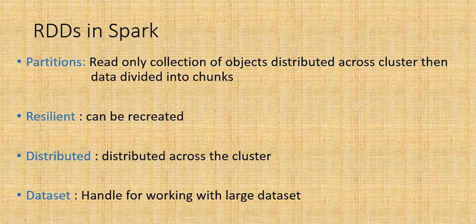RDD: R means Resilient. Resilient means if lost due to some node failures, then it will automatically be recreated — that is Resilient.